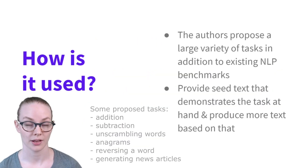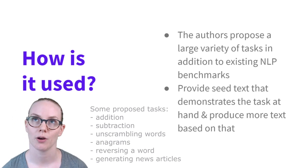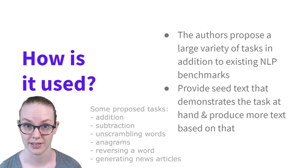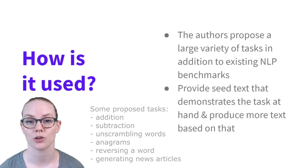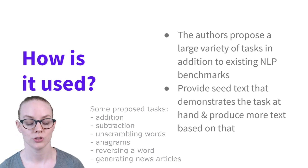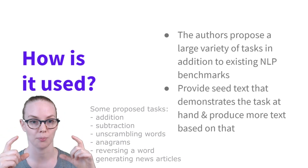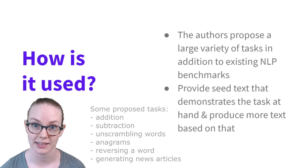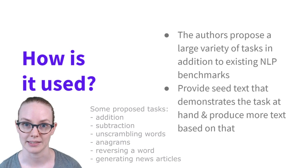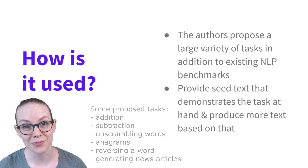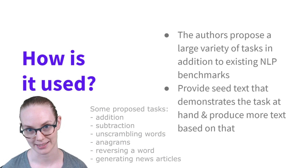How is GPT-3 used? In the paper, the authors propose a large number of tasks that they complete using what's called few-shot learning. You prime the model by providing a couple of examples of whatever the task is, and then the model will continue to auto-complete and give you, hopefully, new examples of it completing that task.